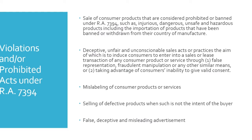Here are some violations on our Prohibited Acts under RA 7394. First, the sale of consumer products that are considered prohibited or banned under RA 7394, such as injurious, dangerous, unsafe, and hazardous products, including the importation of products that have been banned or withdrawn from their country of manufacture. Note that once you are a buyer of these imported goods which have been banned or withdrawn from their country of manufacture, you are also liable under RA 7394. Second, deceptive, unfair, and unconscionable sales acts or practices, the aim of which is to induce consumers to enter into a sales or lease transaction through false representation, fraudulent manipulation, or taking advantage of consumers' inability to give valid consent.